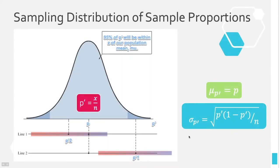Last chapter, in chapter seven, we talked about the sampling distribution of sample means. We could have also talked about the sampling distribution of sample proportions in that chapter, but I decided not to include that section there. We will talk about them here in chapter eight, so I'm going to cover them now.